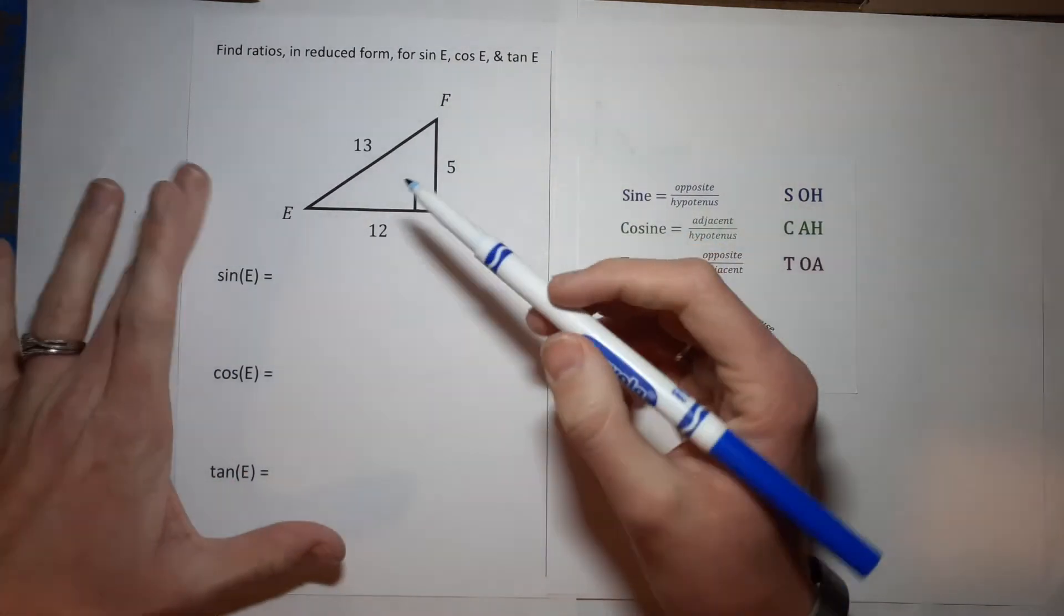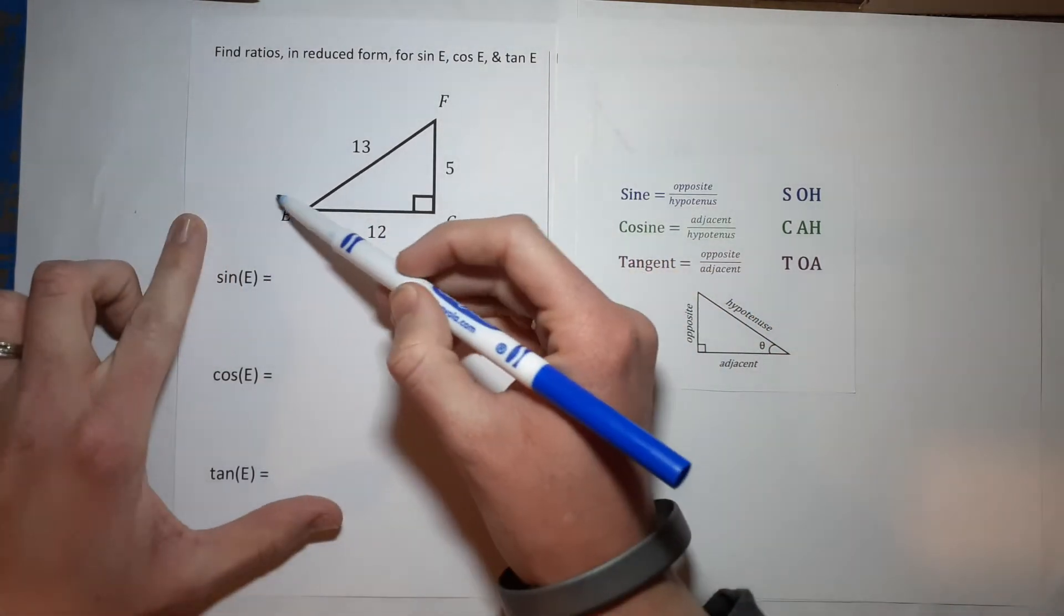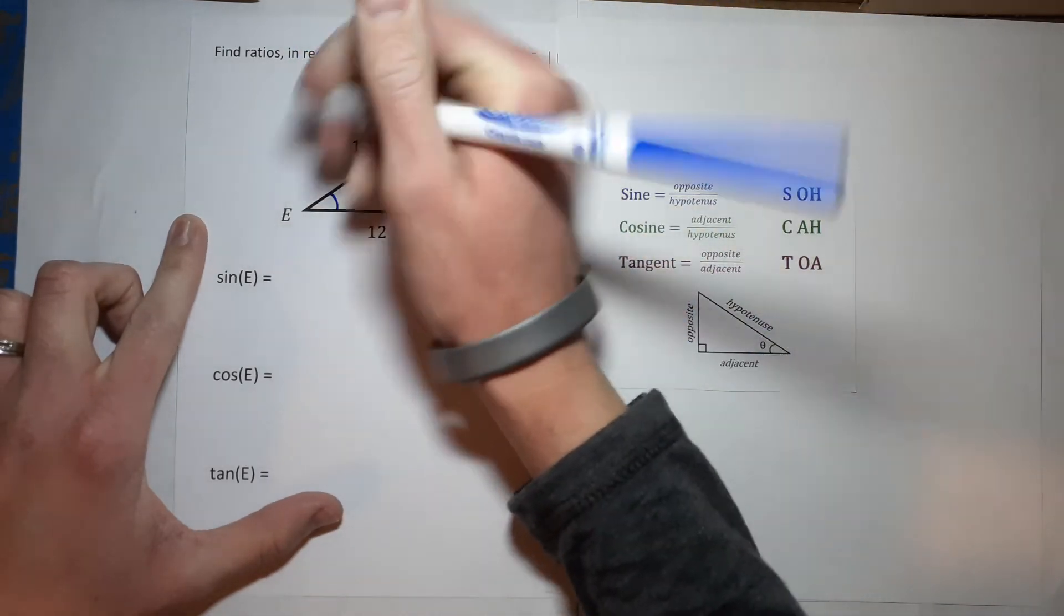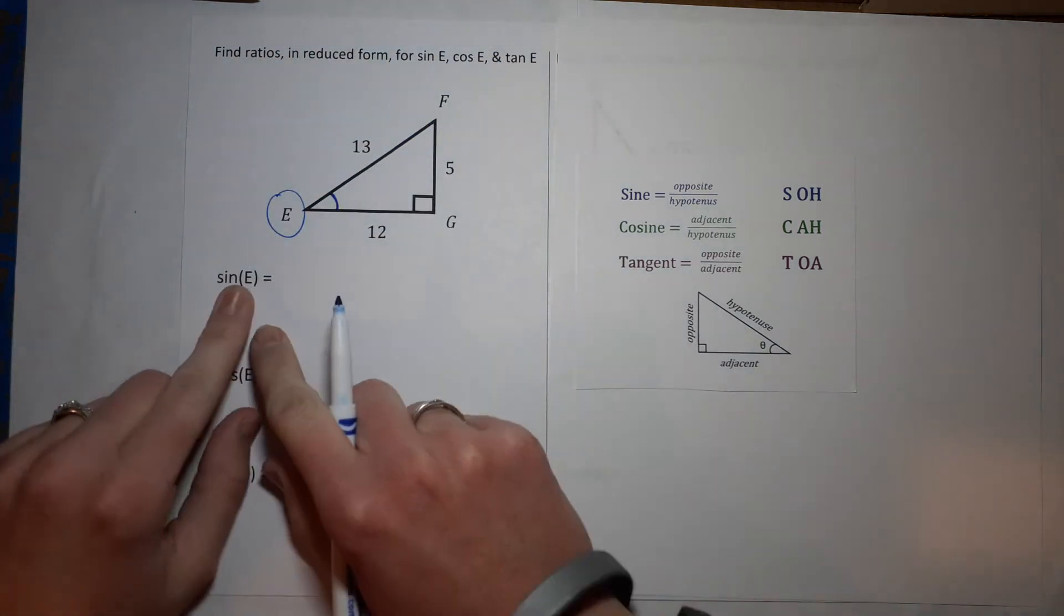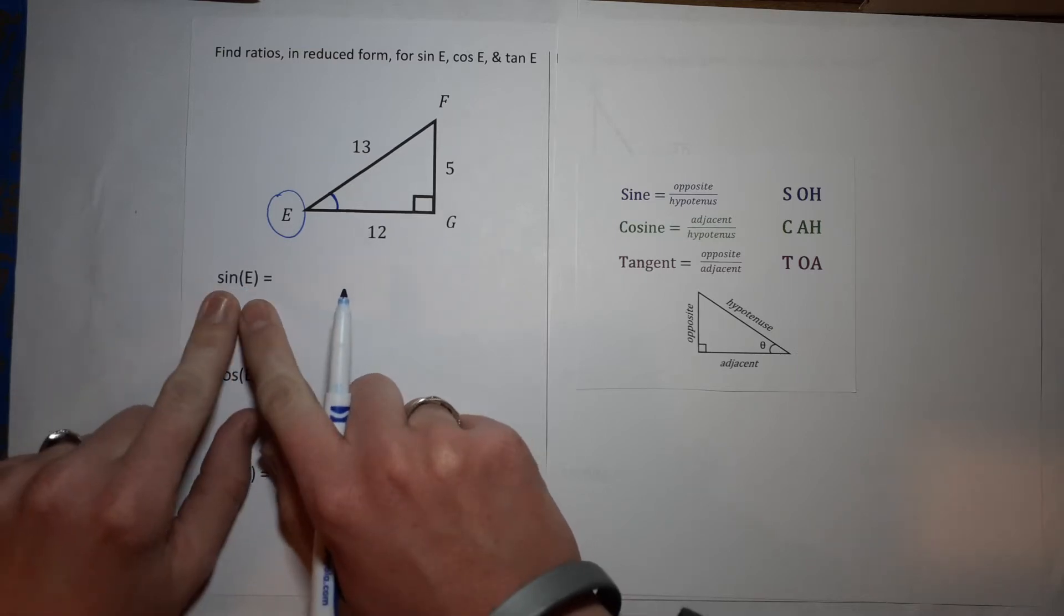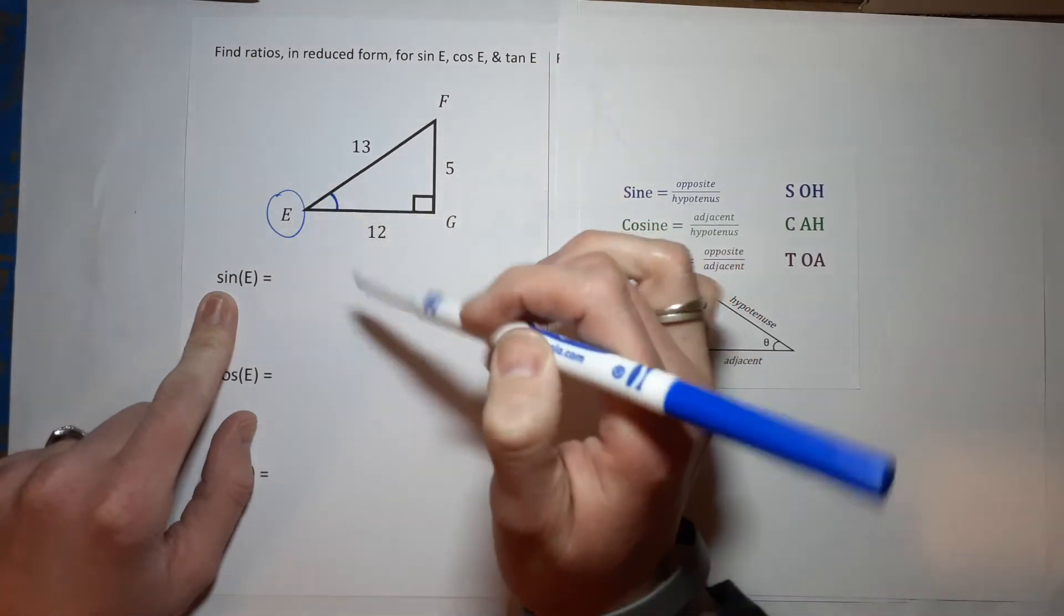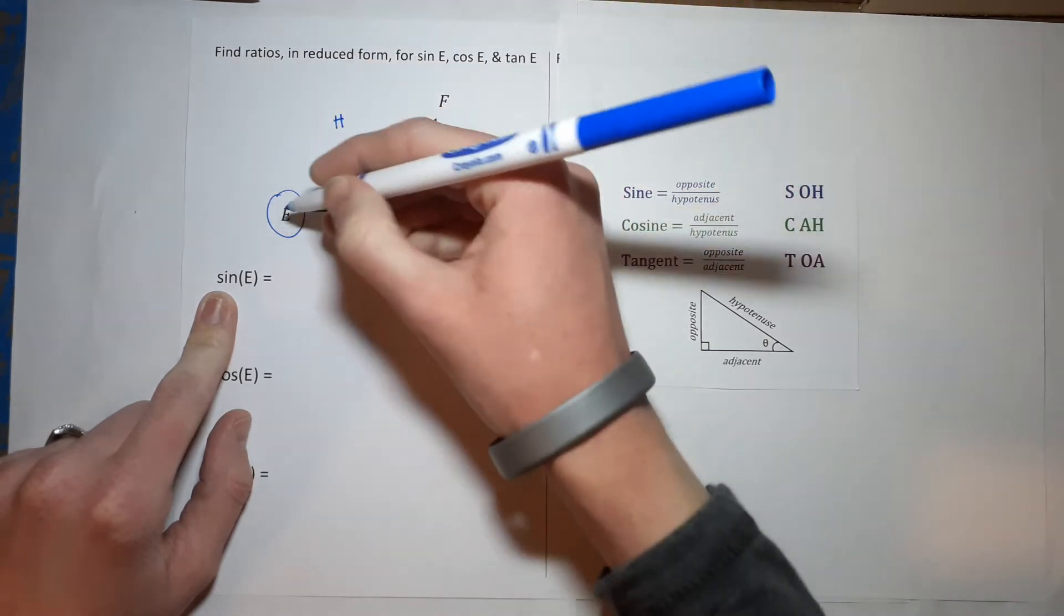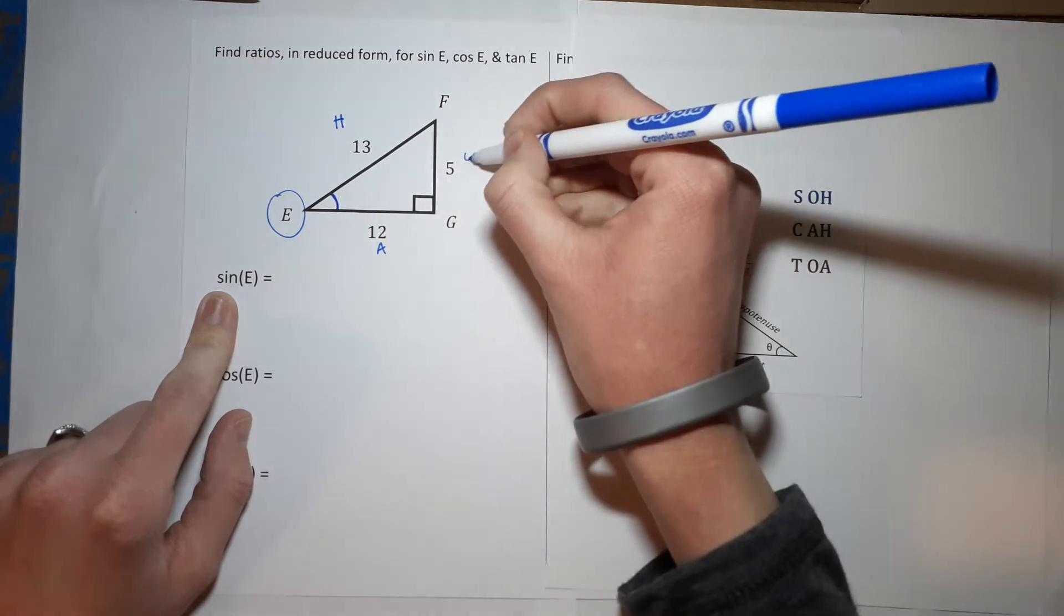The sine of E - that means we are dealing with this angle here, angle E. I like to mark it somehow so I remember. I also like to label the sides. So the one across from the right angle is the hypotenuse, so I'll put H. The one next to the angle we're talking about is adjacent, and the one across is opposite.